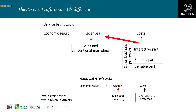The service profit logic looks more complicated — and it is more complicated. Sales and conventional marketing, like pricing and marketing communication, drives revenues. But in addition, the other business processes also influence the firm's possibilities and capabilities to generate revenues. We can divide these other processes into an interactive part, a support part, and an invisible part. The interactive part covers those portions of processes — R&D, deliveries, maintenance, invoicing, any process — where interactions between the customer's people and processes and the firm's people and processes occur.